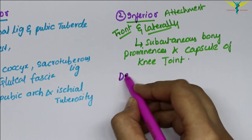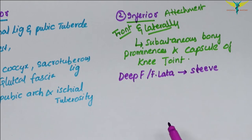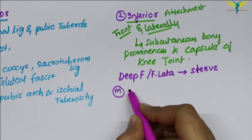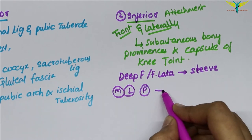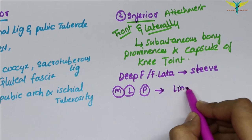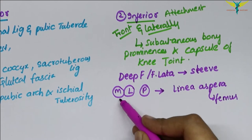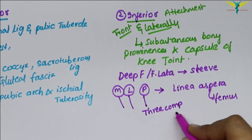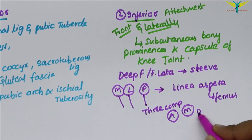The deep fascia, or fascia lata, encloses the thigh like a sleeve, and three muscular septa — the medial, lateral, and posterior septa — extend inward and get attached to the linea aspera on the femur. These septa divide the thigh into three compartments: the anterior compartment, the medial compartment, and the posterior compartment.